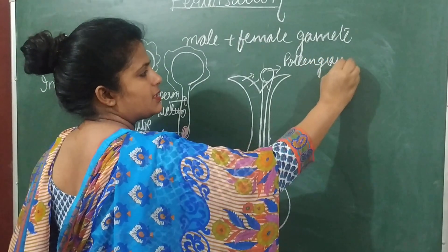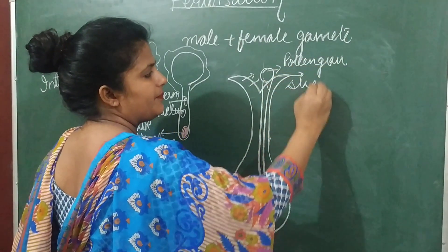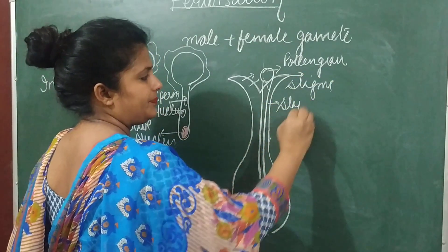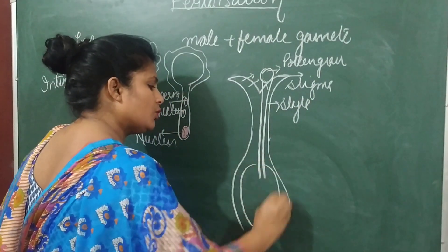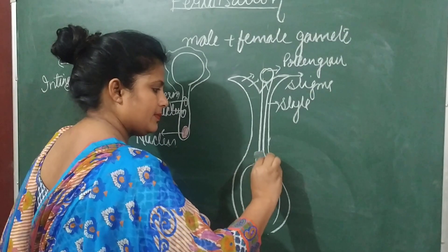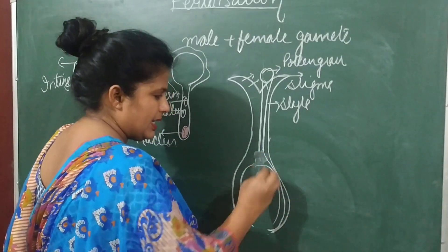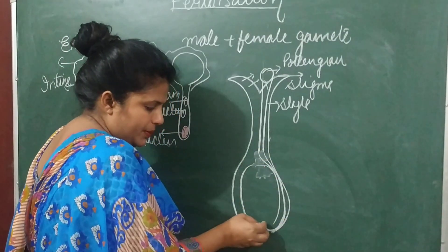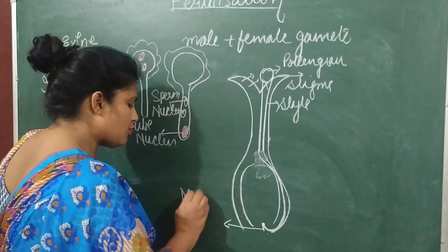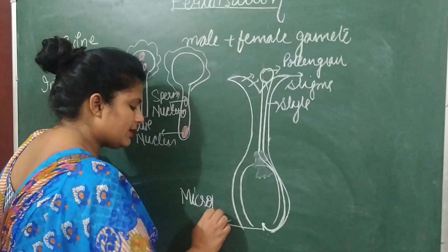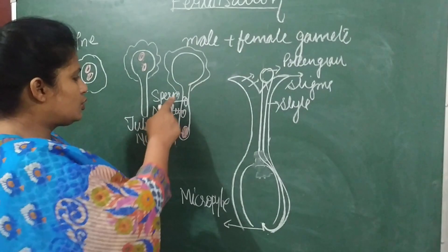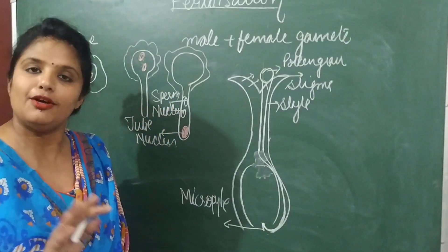The pollen grain falls on the stigma — this is the stigma, and this is the style. The pollen tube enters the ovule through an opening called the micropyle. It enters into the ovule and from there it releases the two male gametes inside the ovule for fertilization.